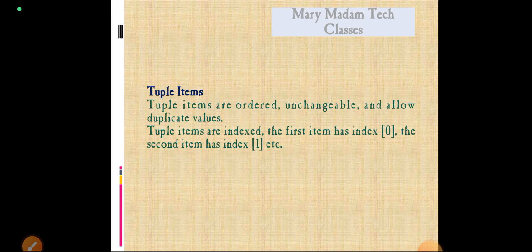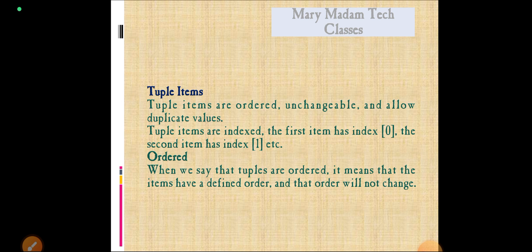The tuple items are ordered, unchangeable, and allow duplicate values. Tuple items are indexed. The first item has index of 0, second item index of 1, and the third item with index 2, etc.